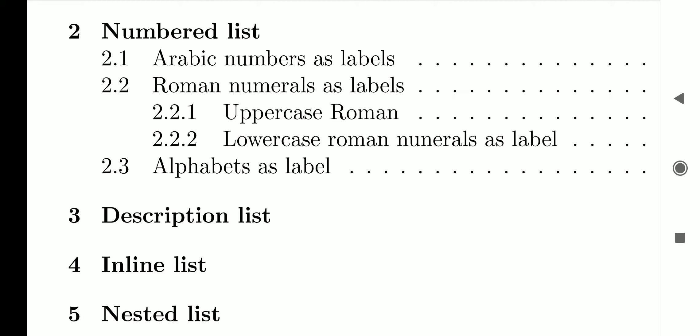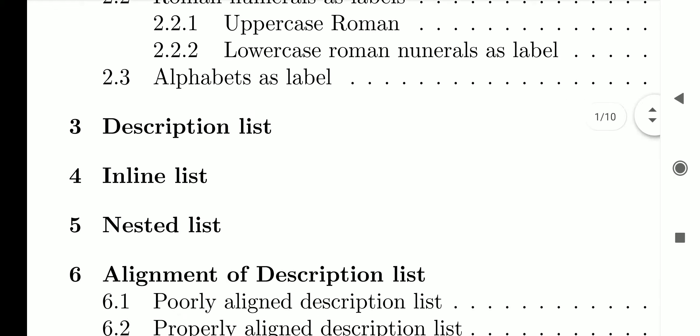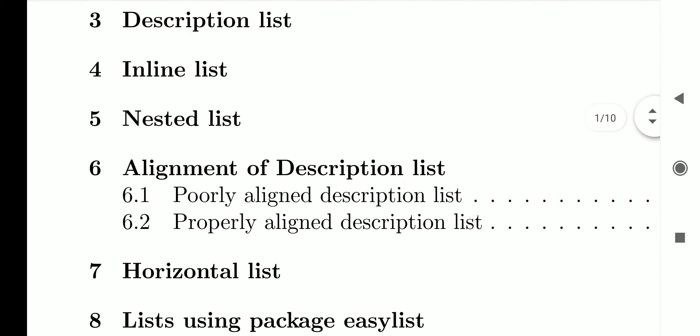Inline lists are used whenever you have a space constraint — all items are described within a sentence on one or two lines. It is recommended that lists not have more than four or five items. After inline lists, we will study nested lists. Alignment of description lists is also required sometimes — when labels are very long they won't align properly, and for that we use a special package called scrextend.